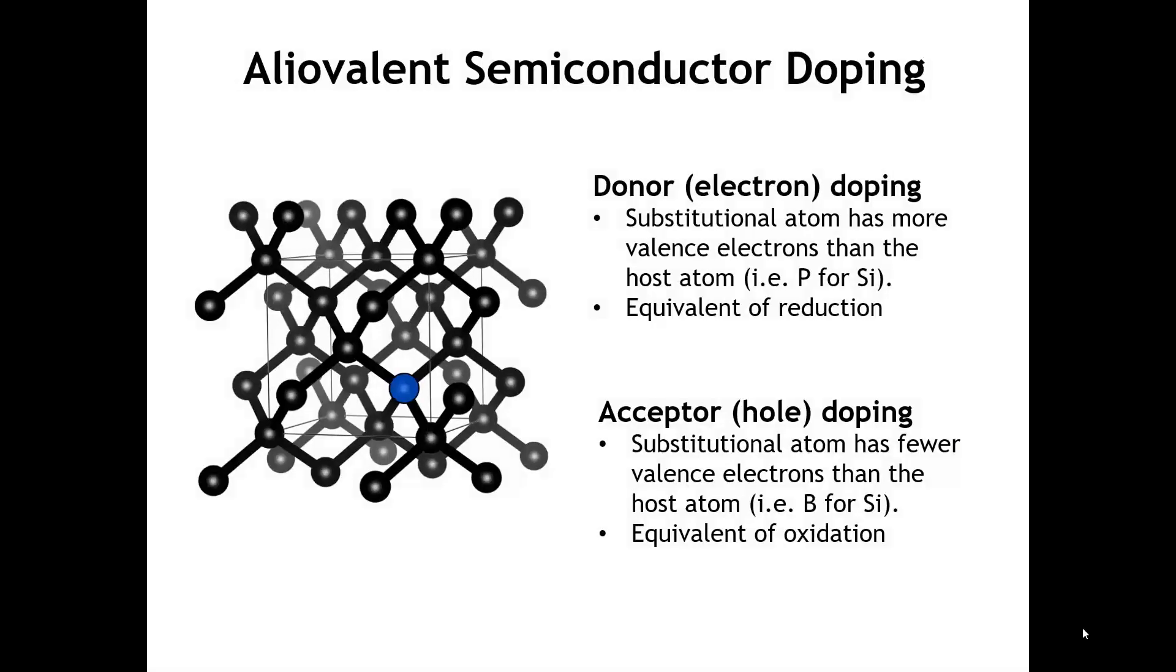Another situation where we have aliovalent substitution is in semiconductors, which is tremendously important in the semiconductor industry. If we start with an elemental semiconductor like silicon and make substitutional replacement of some silicon atoms with an element that has either more or fewer valence electrons, that will effectively dope the structure. If we substitute an atom that has more valence electrons, such as phosphorus, the extra valence electron is actually somewhat free to move around the lattice, boosting electrical conductivity by many orders of magnitude. We can think of this as the equivalent of reduction, because we've effectively added an electron to the silicon host lattice.